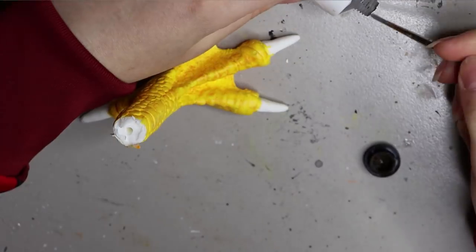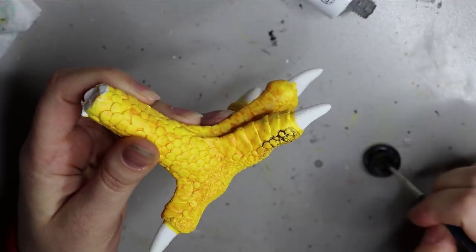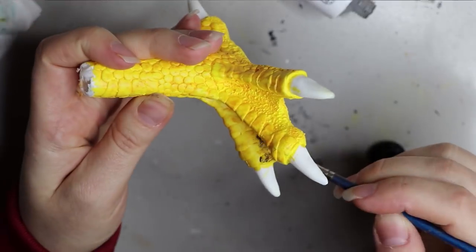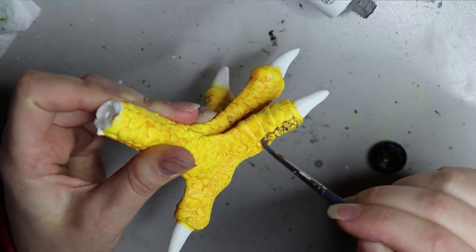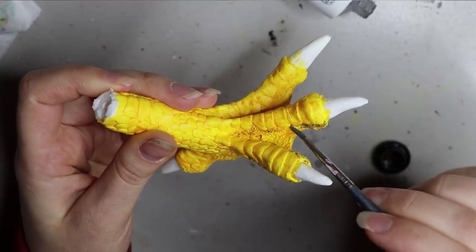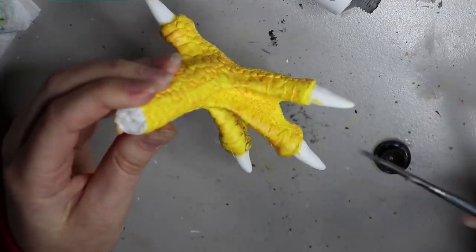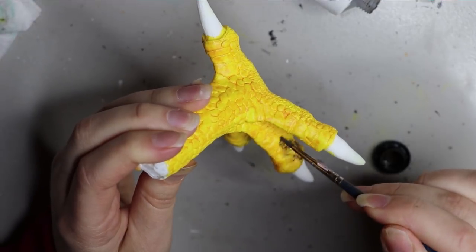I decided to go in a little bit with that raw umber just to make it a bit more dirty, because if you look at eagle feet they're not exactly pristine and clean. They're a little bit brown around the underbelly area and the claw area, so just adding a bit of dirt to the claws here.